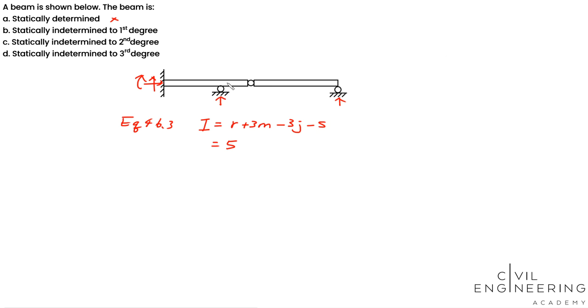And m will be the number of members in the entire structure. So we have two members, one and two, right? So plus three times two. And then minus three times j. j will be the total number of joints. So joints will be this one, this one, and this one. So we have three joints.